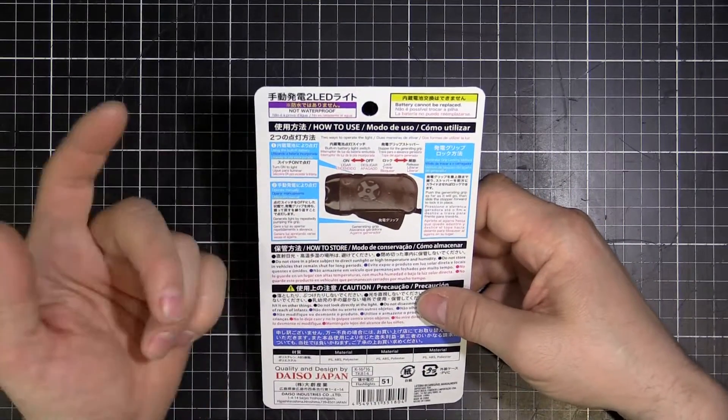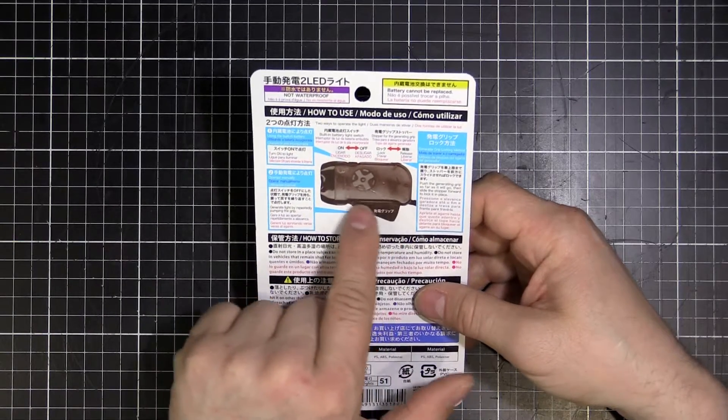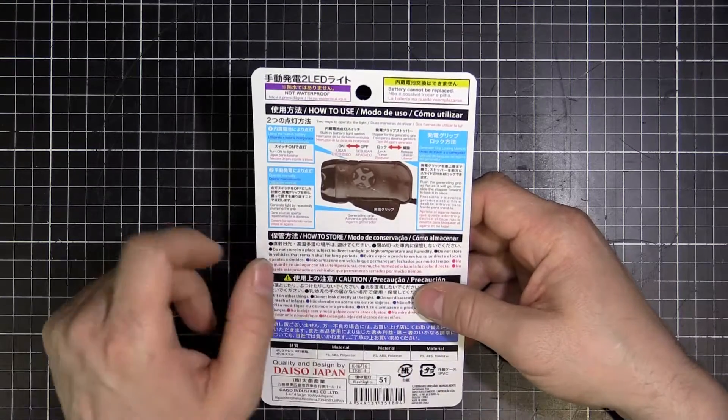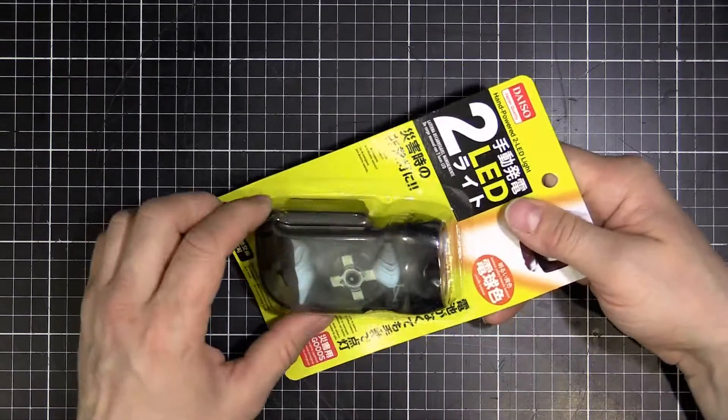On the back we've just got turn on to light, there's a switch there to turn it on and off. You've got the grip that sticks out here, and that just pumps in and out, and there's a little lock so you can push that in and then lock it in so it takes up less space in your bag. So let's pull it apart, see what's inside this thing.